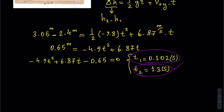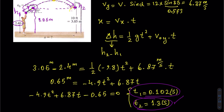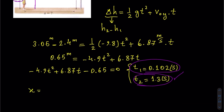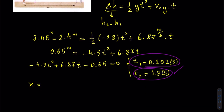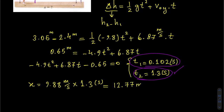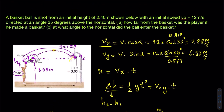Now substituting into the distance equation: x = V sub x × t = 9.88 m/s × 1.3 s = 12.77 meters. That is the answer for Part A.